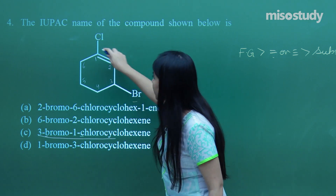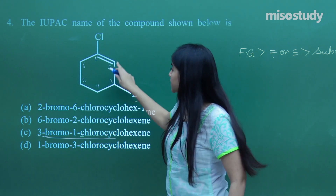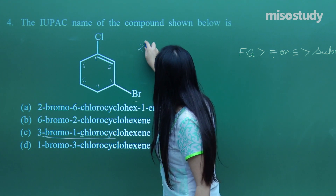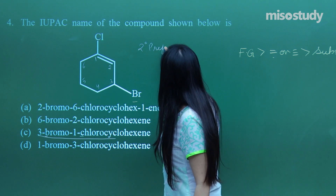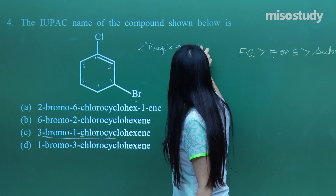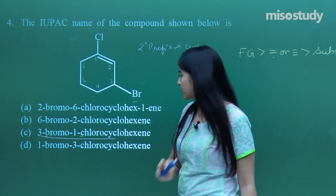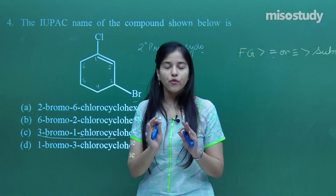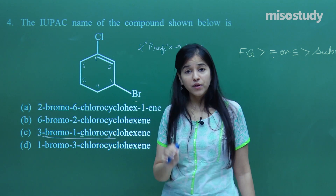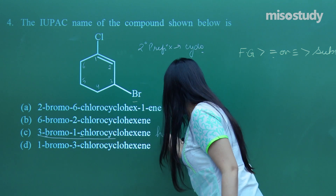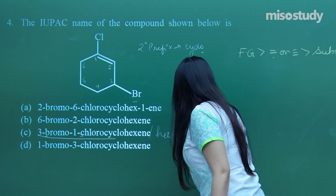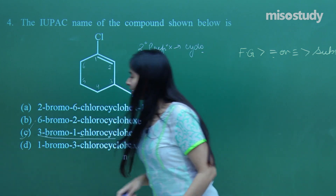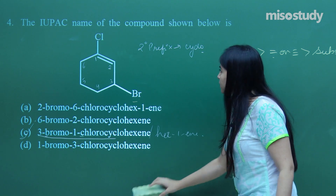Finally: cyclohexene. I need a prefix — a secondary prefix — which is 'cyclo'. So my answer is 3-bromo-1-chlorocyclohexene. You can also write it as 3-bromo-1-chlorohex-1-ene, that will also be correct. I hope everybody has got the answer right.